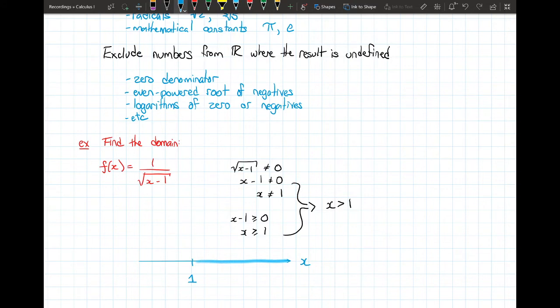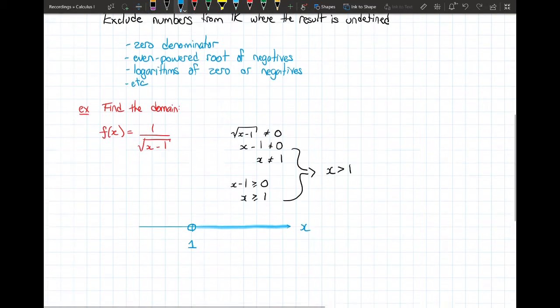We tend to show whether or not a specific number is included or not by using a form of a dot. We have a solid dot to include a specific value, or we have an open dot if we do not wish to include that value. So in this case, I have an open dot on the number 1 because x cannot equal 1. And then I've shaded everything to the right. And that forms a line segment.